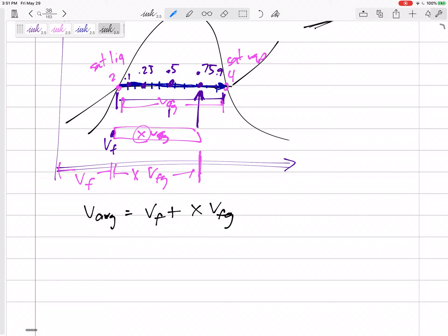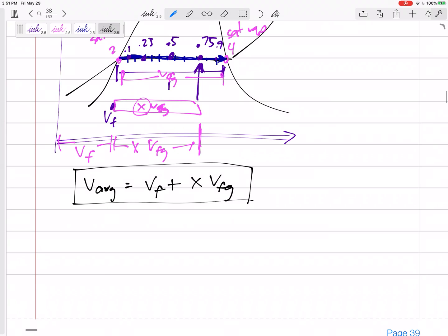If I've got a mixture and a lot of it is starting to vaporize, then my average property would be where I started from plus how far along all these things that are changing by this much. So the average property of a mixture is V_F plus X V_FG.